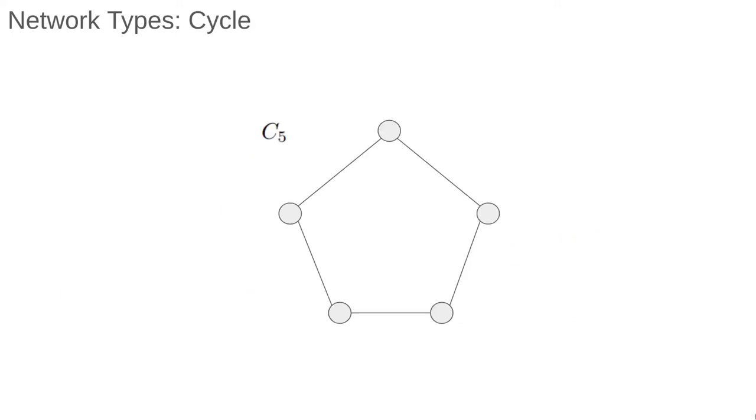There are some common networks which come up repeatedly in theory and applications. Often, these are simple networks which make a part of larger networks. Here we have a network where all the nodes are connected in a loop. This is called a cycle. Since it has five nodes, you can call it a five cycle, and it's often denoted with a capital C and a subscript giving the number of nodes.